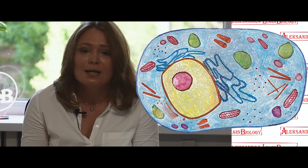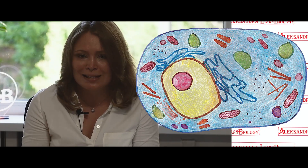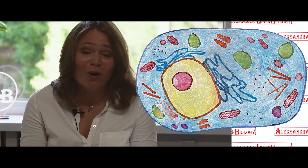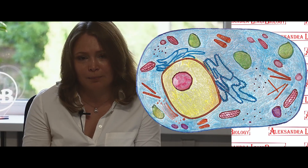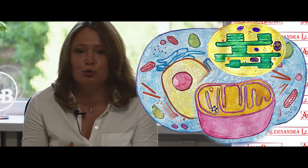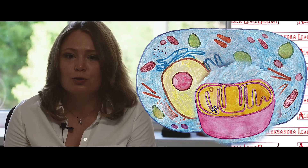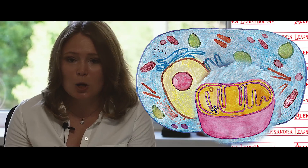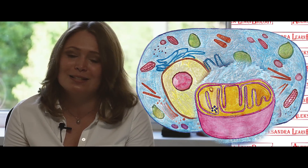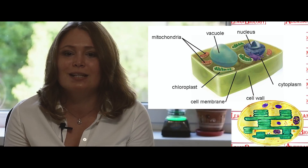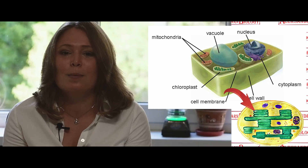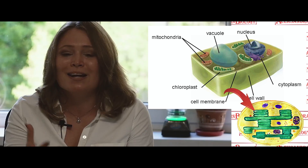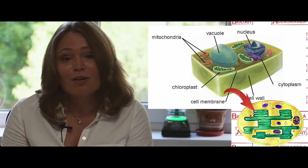Constant components of the cell that perform certain functions are called organelles. Organelles can be double-membrane, single-membrane, and non-membrane. Mitochondria and plastids are two-membrane organelles. Mitochondria produce ATP energy for the cell, so they are called the cell's power stations. Chloroplasts are plant organelles. Chloroplasts contain thylakoids on which photosynthesis occurs. Photosynthesis is the process of formation of organic compounds from carbon dioxide and water.